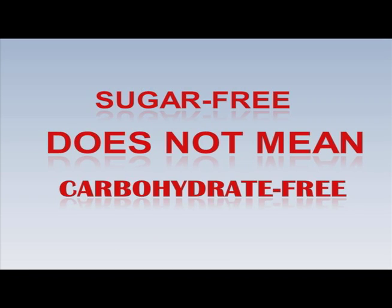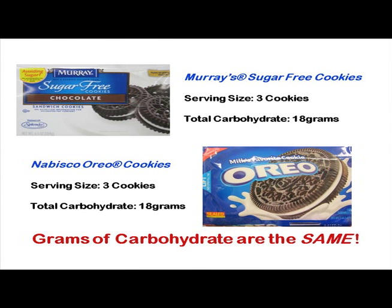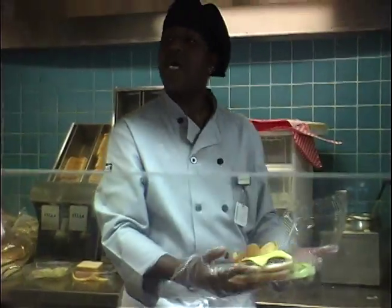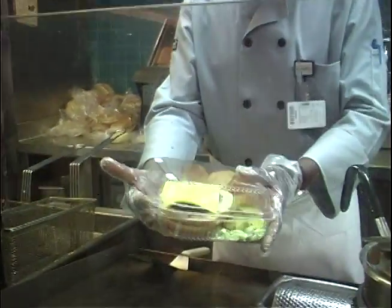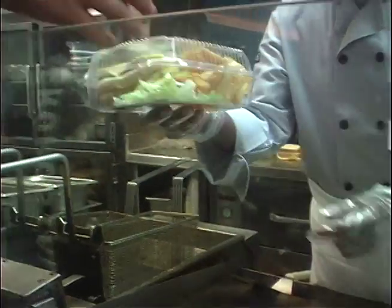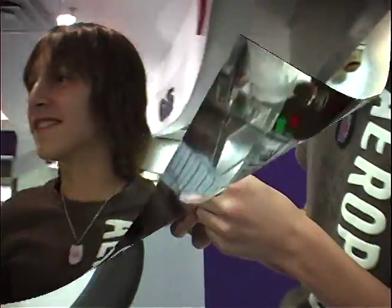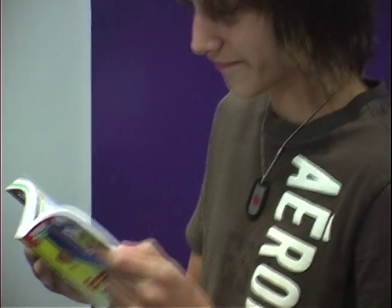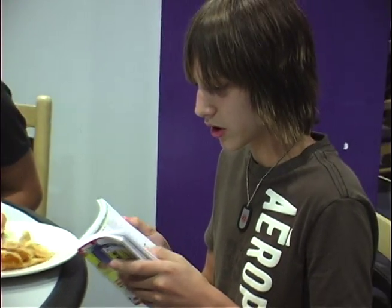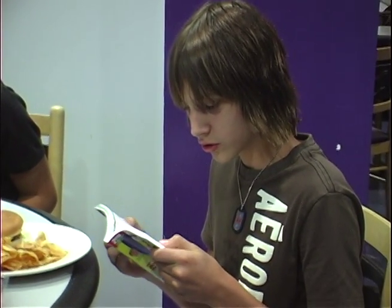Do not look at dietary fiber, sugar, sugar alcohols, or other carbohydrates when determining carbs in a food — these are already part of the total carbohydrate value. Also, sugar-free does not mean carbohydrate-free. Many sugar-free foods have a similar number of carbohydrates as the regular food. When eating away from home, such as at a restaurant or a friend's house, nutrition labels are not always available. Using resources such as fast food guides, carb counting handbooks, and restaurant websites can be useful.